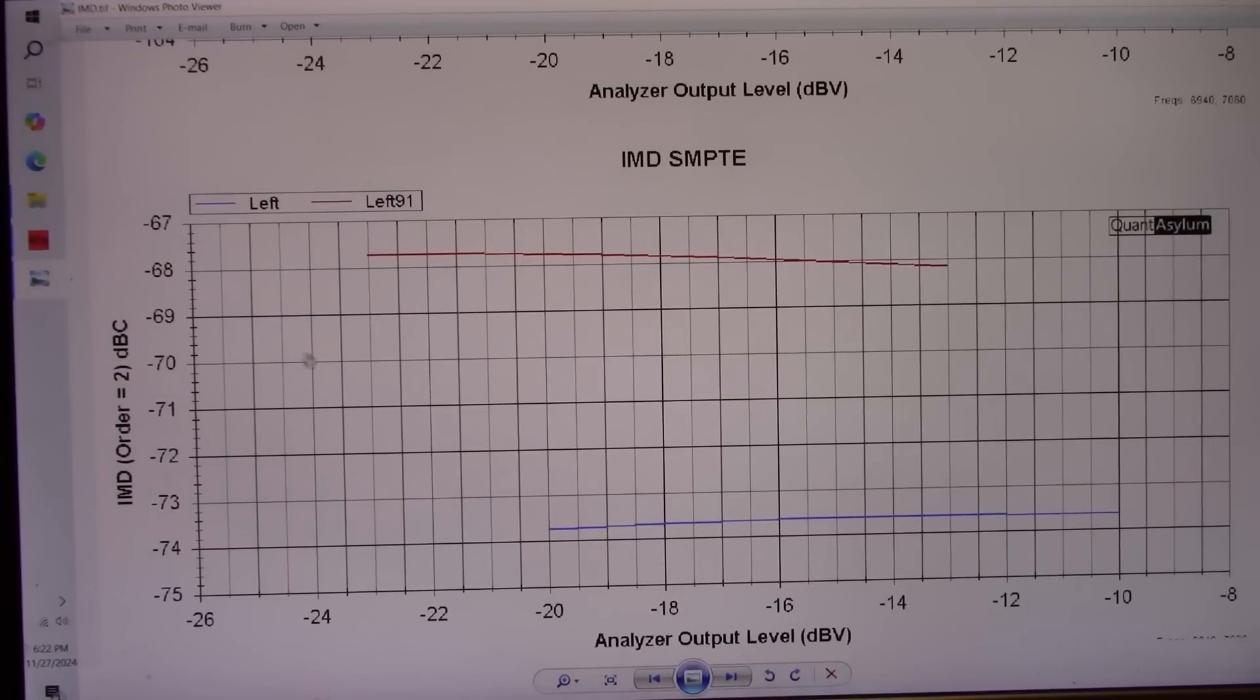The LM1875, same deal here, but look how much higher it is. This is the negative 68 range, 4 ohms. And negative 74 with the 8 ohm load.